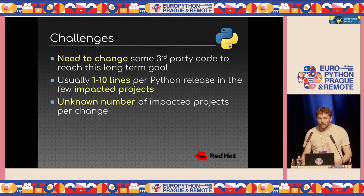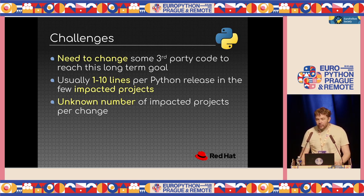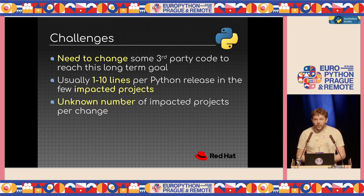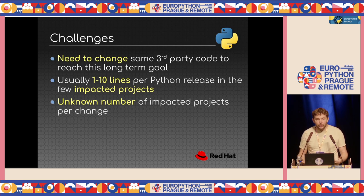There are some challenges for this goal. The main issue is that you have to modify C extensions to move to the limited C API — you have to define the macro but also replace some function calls with other function calls. Another challenge is that moving slowly toward the limited C API means changing the C API for everybody, impacting some packages each time. Every impacted project has to modify between one and ten or more lines. And the biggest challenge is that when we modify the C API, we still don't know exactly how many packages are impacted.